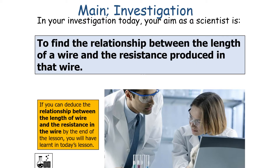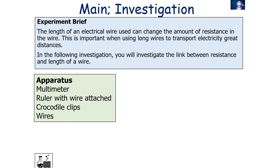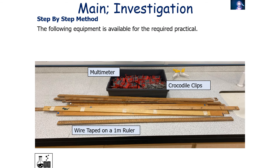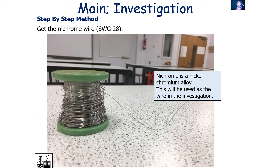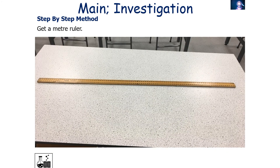In our investigation today we're going to find the relationship between the length of wire and the resistance produced. For this you will need a multimeter, a ruler with a wire attached, and crocodile clips and wires as shown in the picture. You'll need a wire taped onto a one-metre ruler, a multimeter, a crocodile clip set, and nichrome wire — a nickel-chromium alloy.